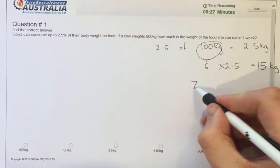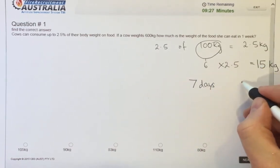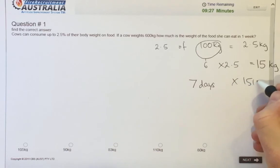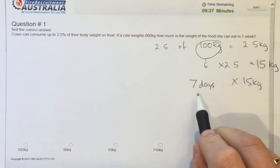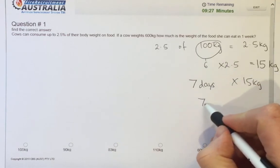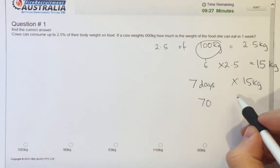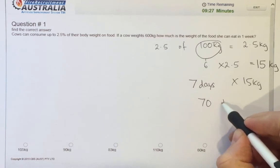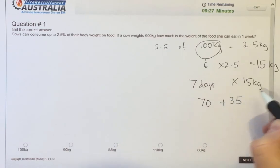So there's seven days in a week times 15 kilograms each day. So seven times 10 is 70. Seven times five is 35. 35 equals 105 kilograms.